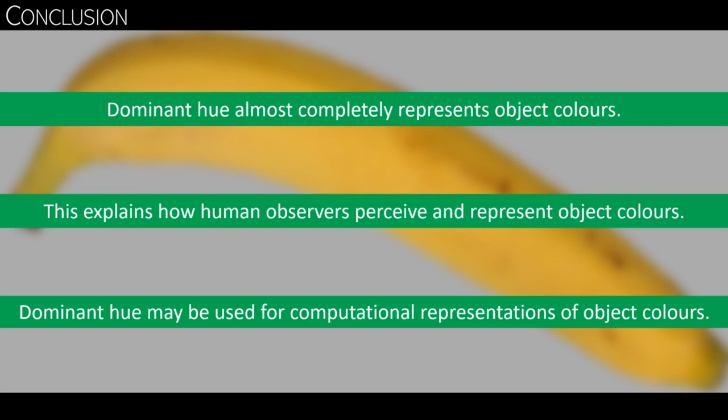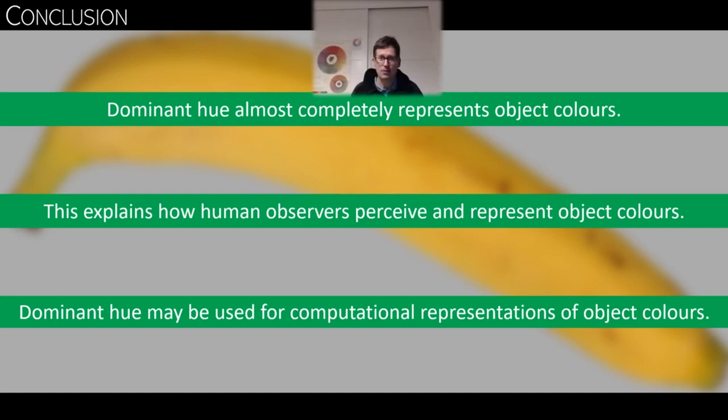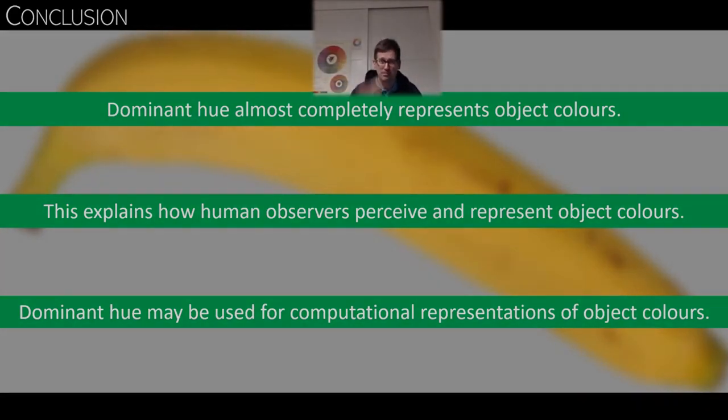These findings also imply that we can simplify the color distribution in all those images by projecting them on their dominant hue. And this may be very useful for computational representations of object colors. Thank you very much for watching that far and I hope you have a lot of questions for me.